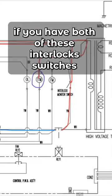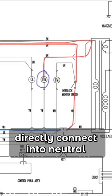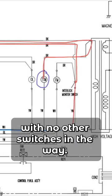No matter what, if you have both of these interlock switches closed, you're just going to have line directly connected to neutral with no other switches in the way.